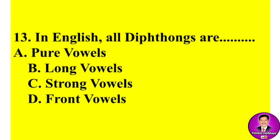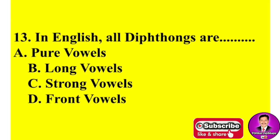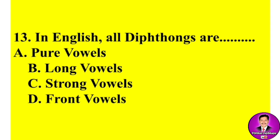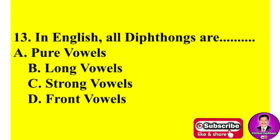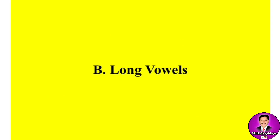Next MCQ: In English, all diphthongs are — options are: A, pure vowels; B, long vowels; C, strong vowels; D, front vowels. Note down your answer — all diphthongs are B, long vowels.